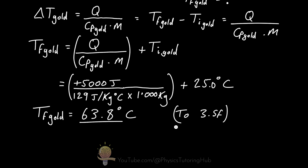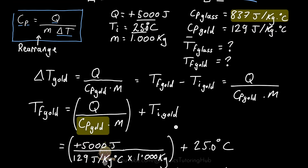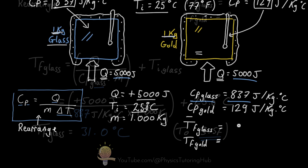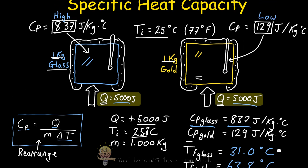For the glass, all values are the same except the specific heat capacity, which is 837 joules per kilogram per degree Celsius. When we plug all these numbers in, the final temperature of the glass is only 31.0 degrees Celsius to three significant figures. So the gold has increased its temperature by about 38 degrees, but the glass has only increased its temperature by around 6 degrees Celsius — even though we added the same amount of heat energy to both one-kilogram blocks.